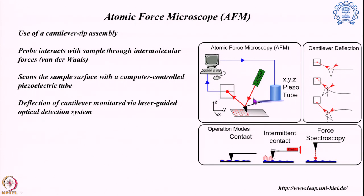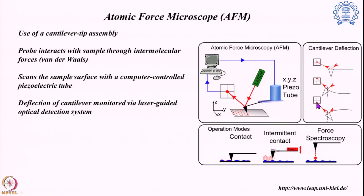The movement of this tip is monitored by the laser optical detection system. The laser hits the top of the tip, gets reflected, and is monitored by the optical detection system. If the cantilever and tip are level, the laser hits a particular position on the optical detector. If the tip moves upward, the reflected laser is detected at a different region showing upward movement; if it goes down, the laser is detected at the bottom region of the optical detection system. With this laser and optical detection technique we can follow even minute changes detected by the tip.